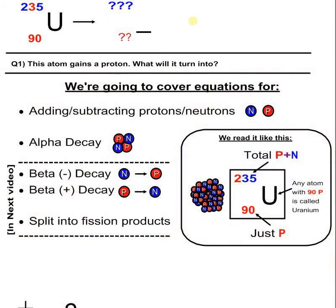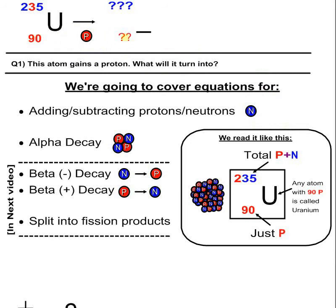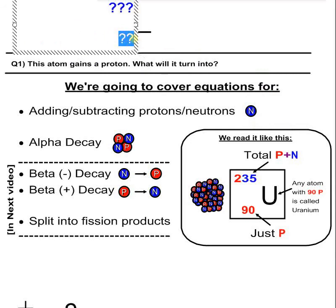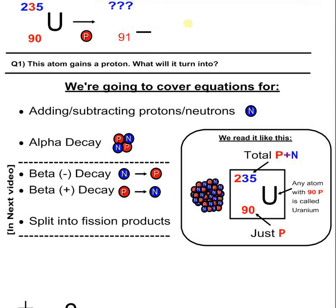Question one. So this atom gains a proton — what will it turn into? The red number down here is the atomic number, so that's the number of protons. It gains a proton, so we go from 90 to 91 protons. Easy.